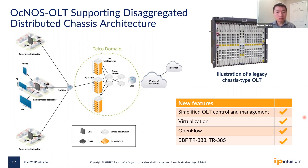The next important networking challenge is network automation and orchestration. We support this by virtualizing our OLT control plane — customers can run it as a VM in their data center — and we provide standard northbound interfaces to the device. This is how we help customers accelerate network orchestration.